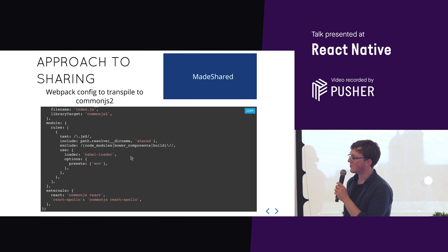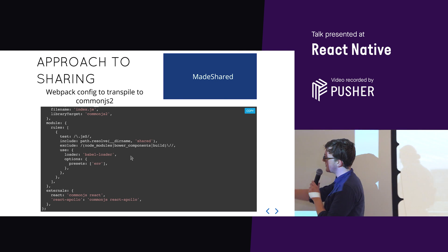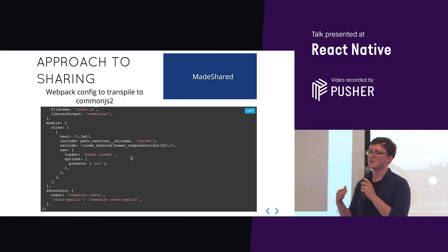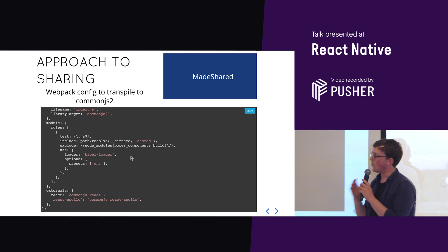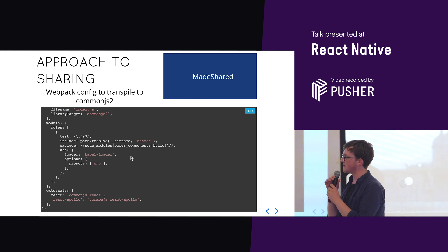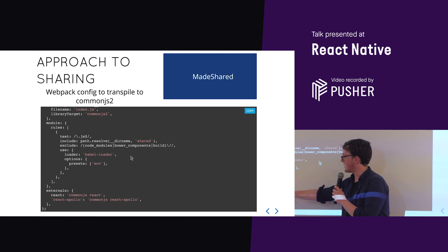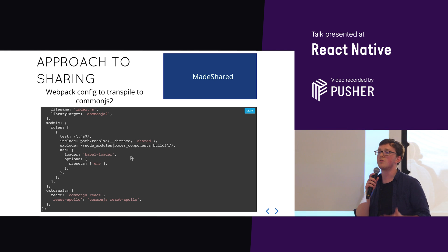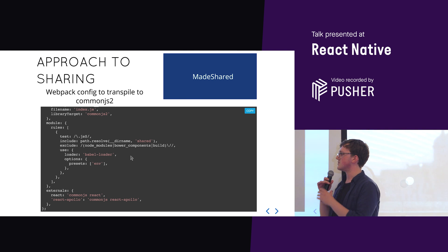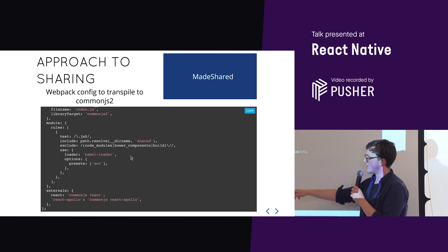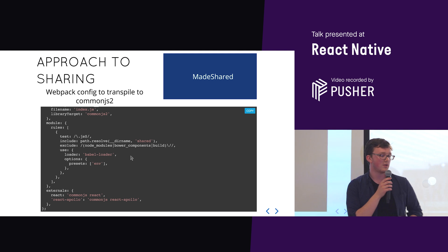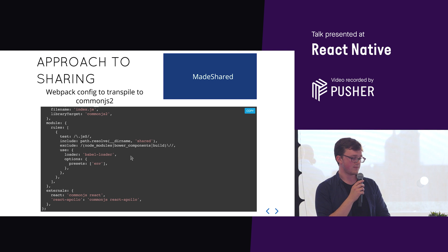The interesting part that saved us a lot of headaches was the externals configuration in Webpack, which allows us to use the parent repository's library dependency. Web and Native could in the future be on different versions of React, and this allows us to say: use the importing repository's version of React. So if Web is on one version and Native is on another, we can use the importing parent's version. We did the same for React Apollo and Redux.